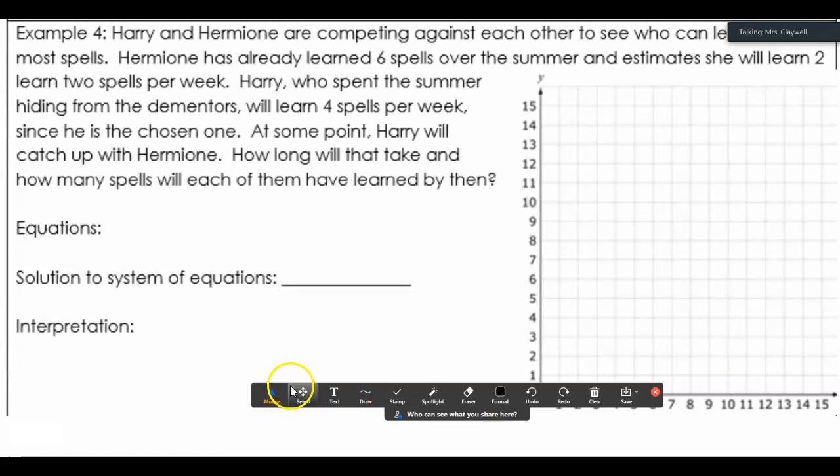Harry and Hermione are competing against each other to see who can learn the most spells. Hermione has already learned 6 spells over the summer and estimates she will learn 2 more spells per week. Harry spent the summer hiding from Dementors and will learn 4 spells per week. At some point, Harry will catch up with Hermione. How long will it take? How many spells will each of them have learned by then?